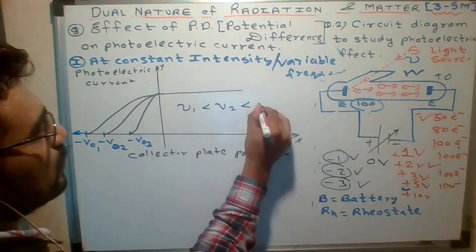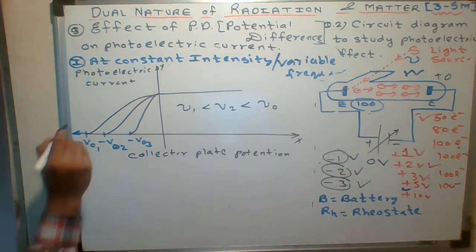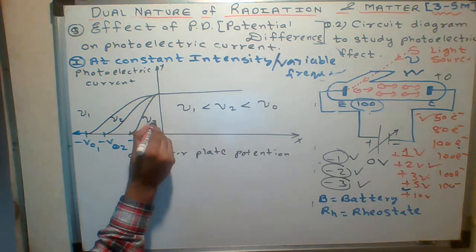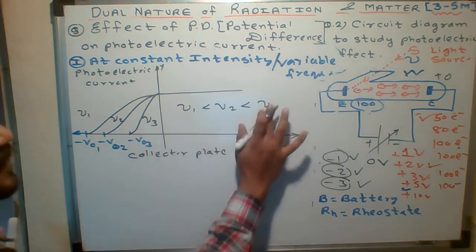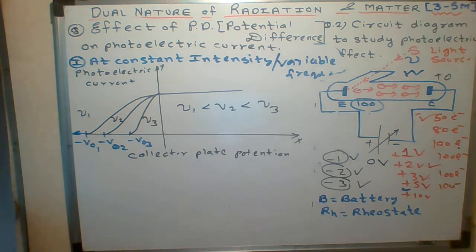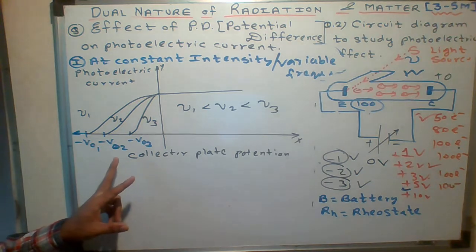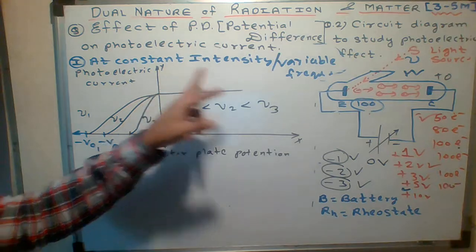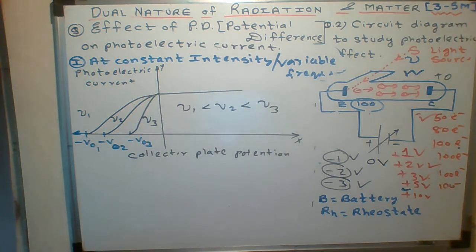...photoelectric current will also increase. This is what we will say: nu one, nu two, and nu three. Remember this - the simplest explanation about variation of photoelectric current versus constant intensity and variable frequency.